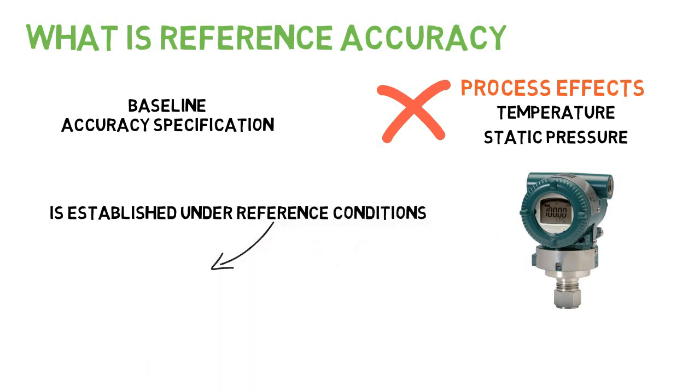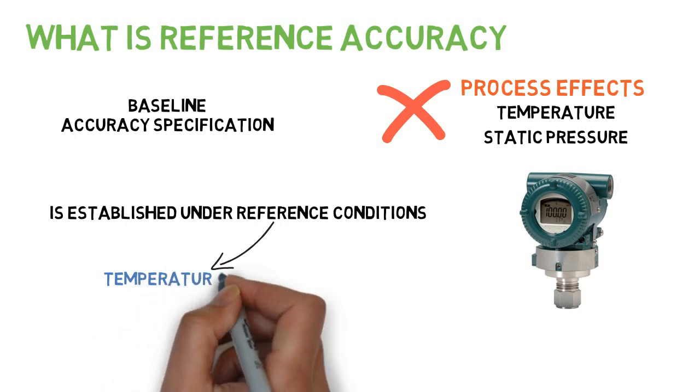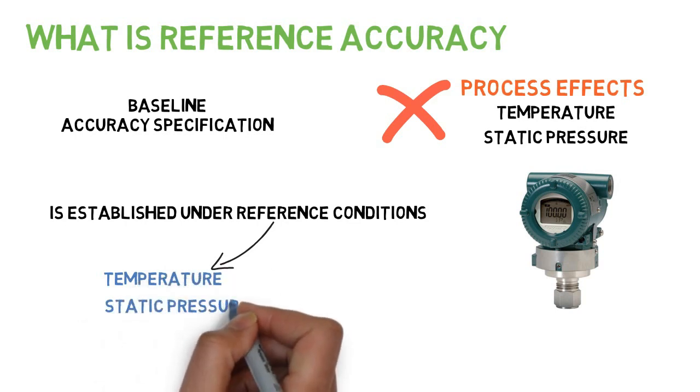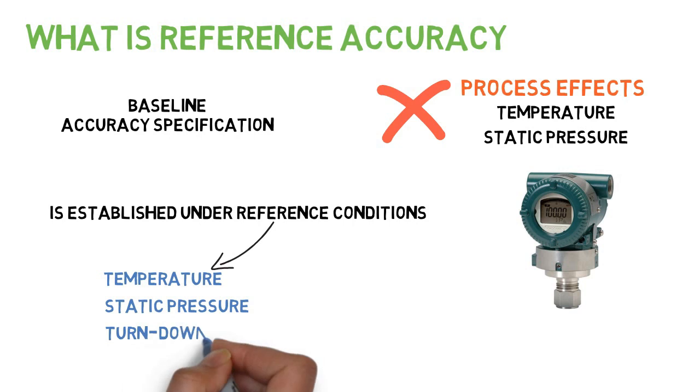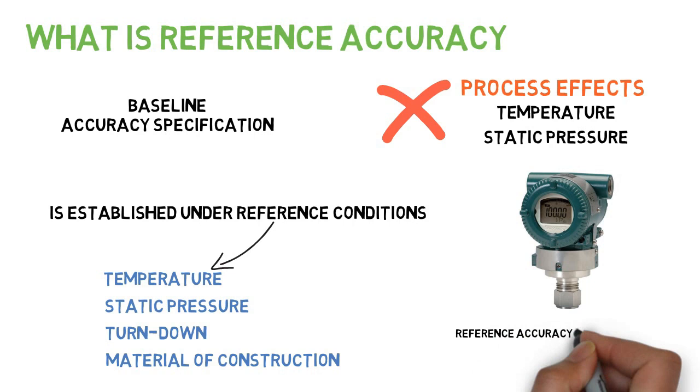These reference conditions include temperature, static pressure, turndown, and material of construction. The reference accuracy is valid for the entire temperature and static pressure range of the transmitter.